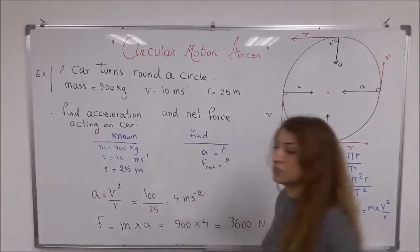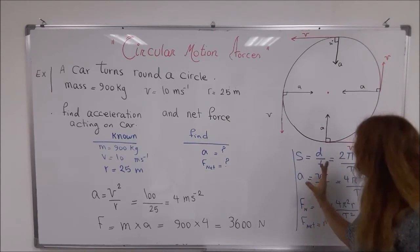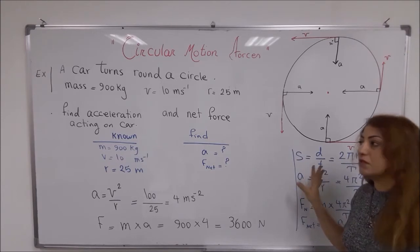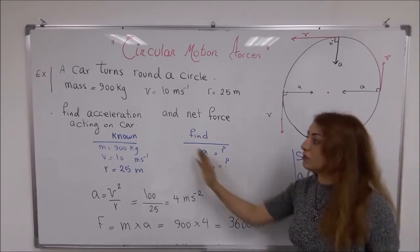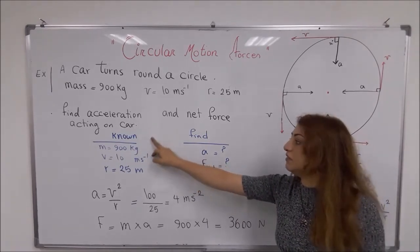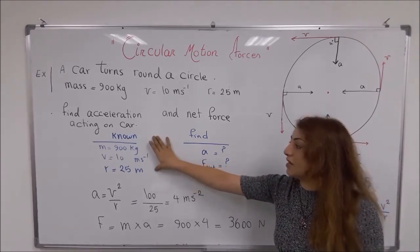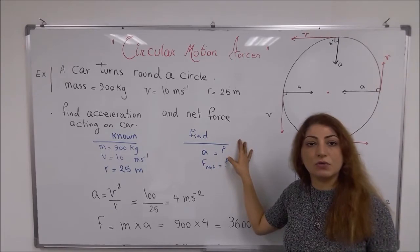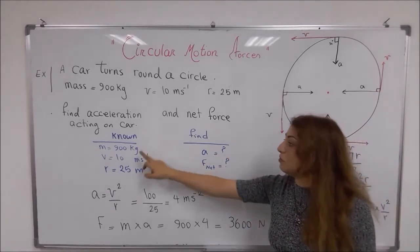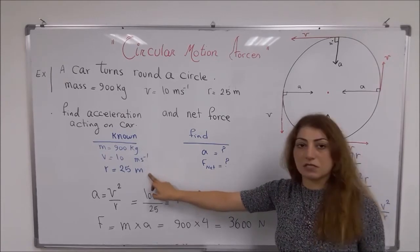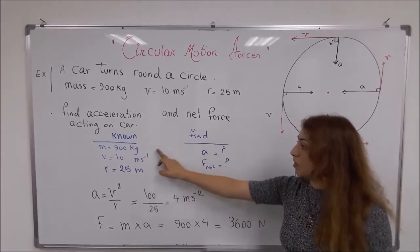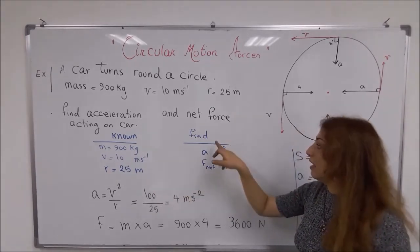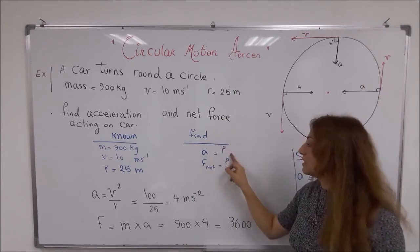What you have to do is first write down whatever is given in the question and what you are asked to find. What we know is: mass, velocity, and the radius of the circle. What we are asked to find is the acceleration and the net force.